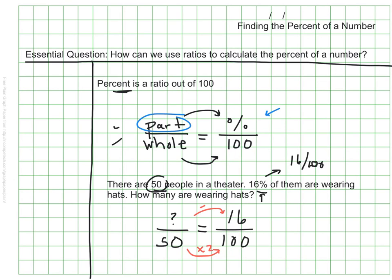So really all I have to do is figure out what times 2 is 16. I could divide 16 by 2 and that's 8. So 8 people are wearing hats. And that makes sense because if I put an 8 here these ratios are equivalent. So the part of the people at the theater who are wearing hats is 8 people.